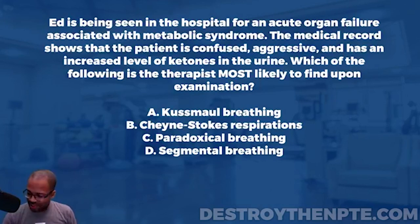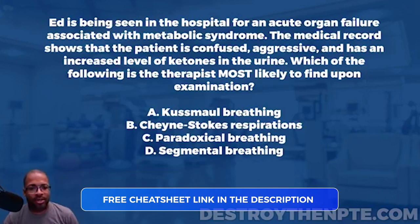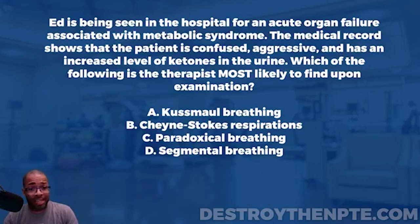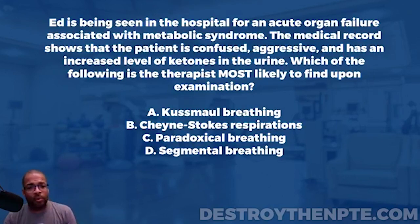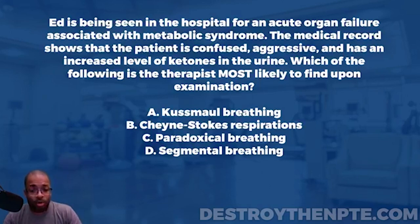For this week's challenge Wednesday, we have our patient Ed. Ed is being seen in the hospital for acute organ failure associated with metabolic syndrome. The medical record shows the patient is confused, aggressive, and has increased levels of ketones in the urine. Which of the following is the therapist most likely to find upon examination? A: Kussmaul breathing, B: Cheyne-Stokes respirations, C: paradoxical breathing, D: segmental breathing.